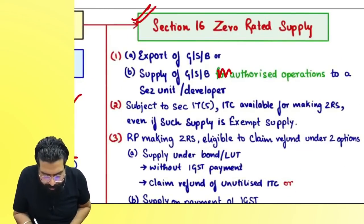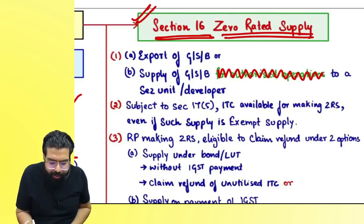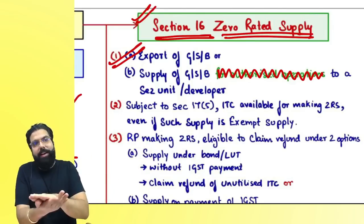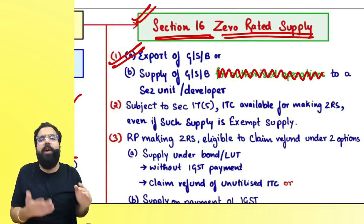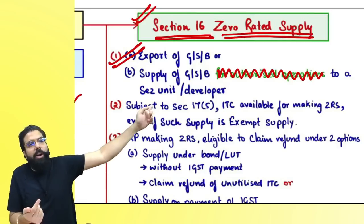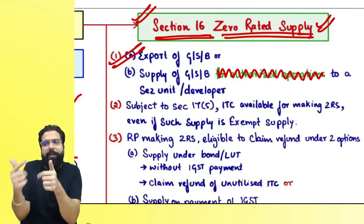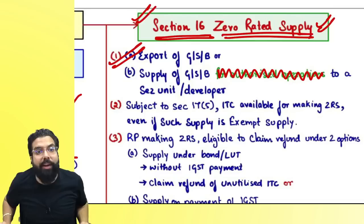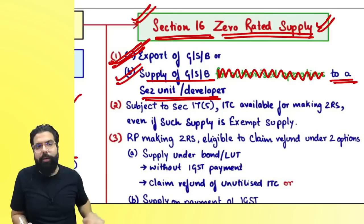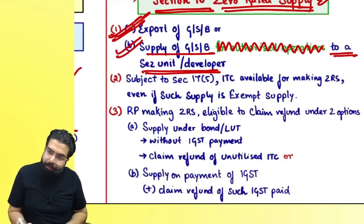Section 16 covers zero-rated supply. Zero-rated supply means exports are always zero-rated. In case of goods, export means goods going outside India. For services, the conditions are: recipient is outside India, place of supply is outside India, payment in foreign convertible currency or INR where permitted by RBI, and both parties are not mere establishments of a distinct person. Supply to an SEZ unit or developer is also zero-rated. When a supply is zero-rated, ITC is available and a refund can be claimed.